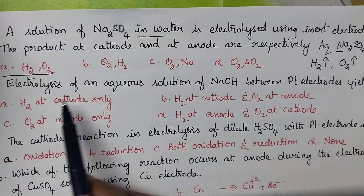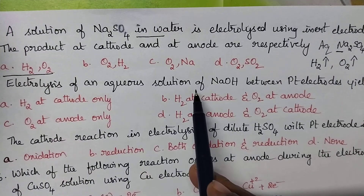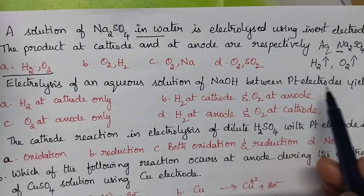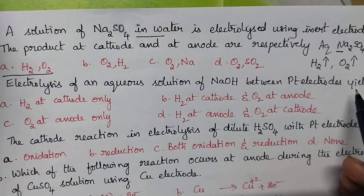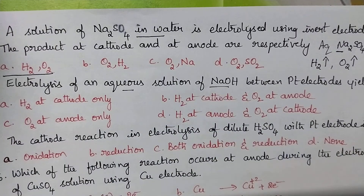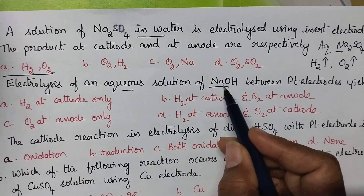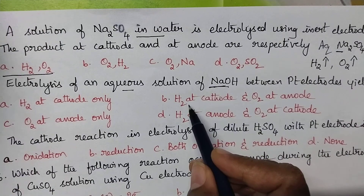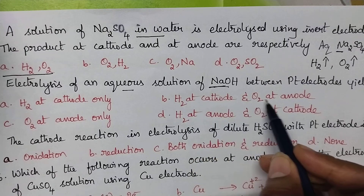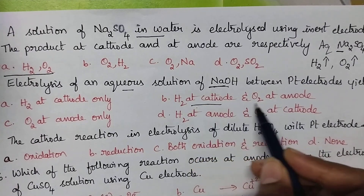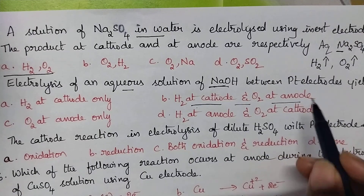The electrolysis of an aqueous solution of sodium hydroxide between platinum electrodes — here also it is an aqueous solution and the metal is other than a noble metal. So at the cathode, hydrogen gas is liberated and at the anode, oxygen gas is liberated. Option B is the right answer.